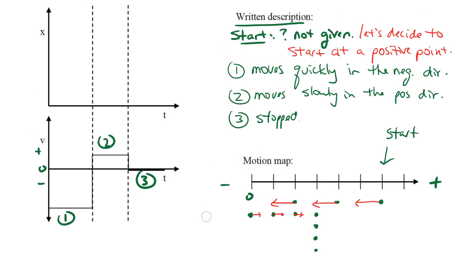Now does that help us make the position-time graph? I'm going to start fairly far in the positive direction, so I'll start up here. I need to move in the negative direction — getting quite significantly smaller — so I'll draw a straight line like this. Then I change directions and move in the positive direction, but not as quickly so it's not as steep. Then I stay still for a while.